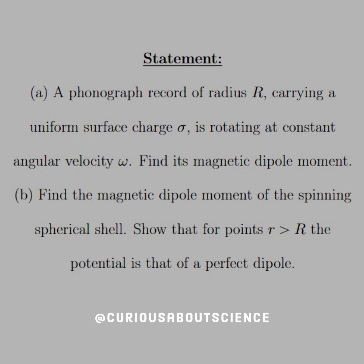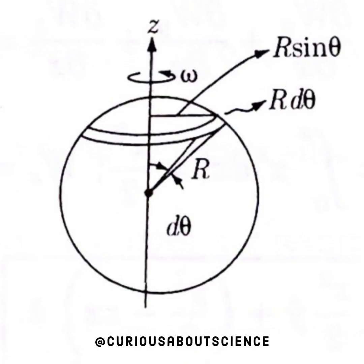Part B: find the magnetic dipole moment of the spinning spherical shell. Show that for points little r greater than big R, or points outside of the sphere, the potential is that of a perfect dipole. Alright, fair enough.